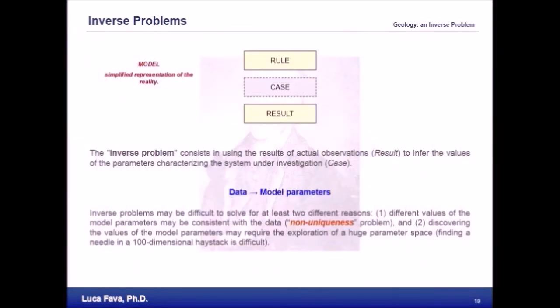To summarize, an inverse problem consists in using the results of a factual observation to infer the values of the parameters characterizing the system under investigation. In other words, we move from the data to the model parameters.